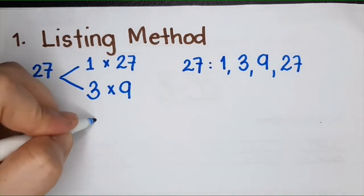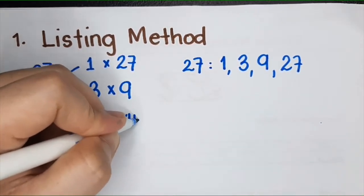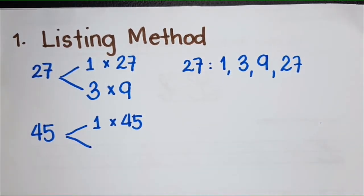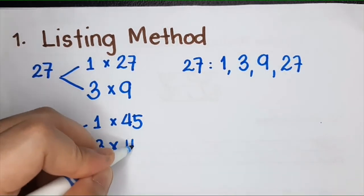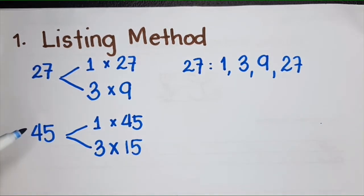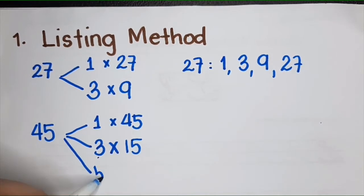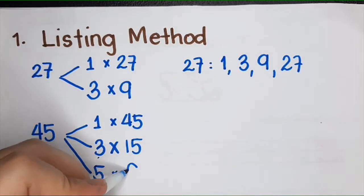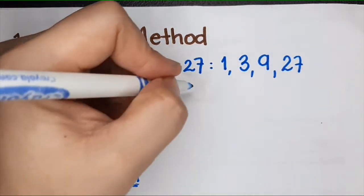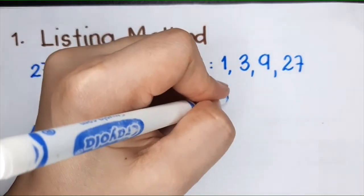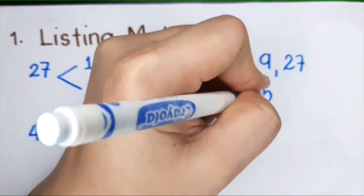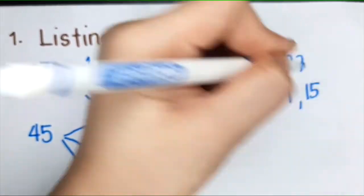Start again with 1. 45 is 1 times 45. Can you have 2 as a factor of 45? No. The next number is 3, 3 times 15, right? What else? You cannot have 4. 5 times 9. So for 45, the factors are 1, 3, 5, 9, 15, 45.